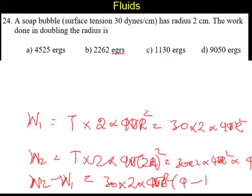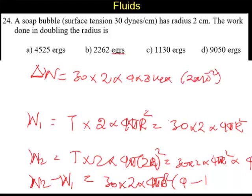The extra work done, ΔW is going to be equal to 30 times 2 times 4 times 3.14 times R is 2 times 10⁻², the whole square, times 3. So the answer is 9050.